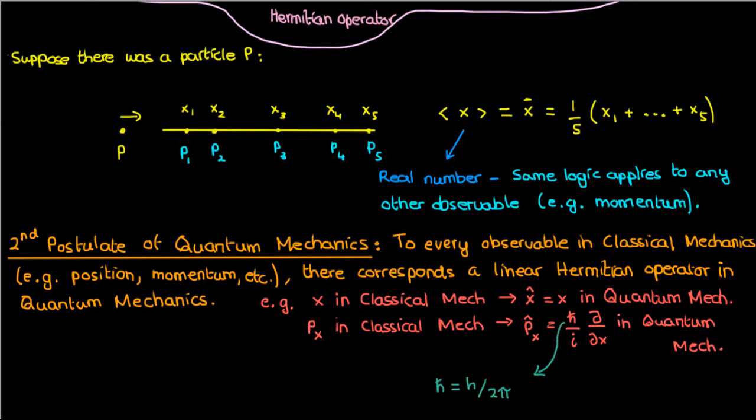So this second postulate, which is one of the foundational statements of quantum mechanics, is motivated by the fact that Hermitian operators have real expectation values. That should do it for the lecture. In the next video I'm going to prove the generalized uncertainty principle.